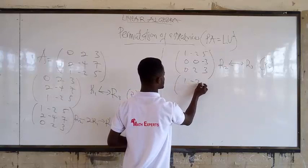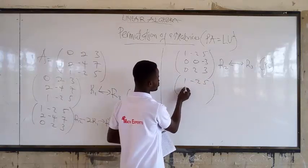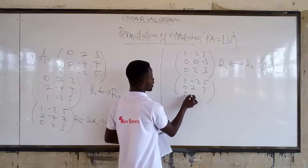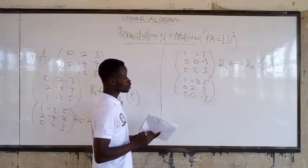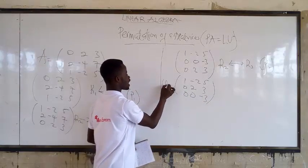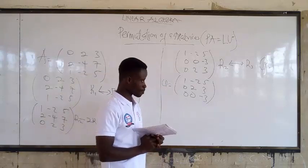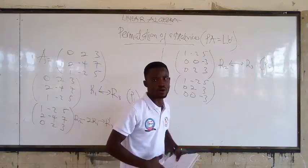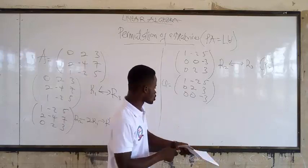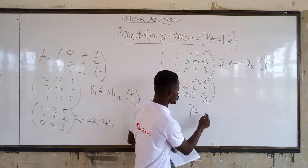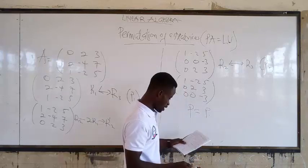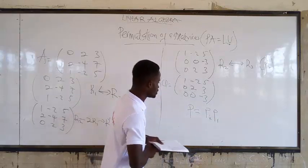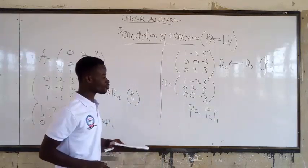After that second swap we get: row 1: 1, -2, 5; row 2: 0, 2, 3; row 3: 0, 0, -3. We have now achieved our upper triangular matrix.